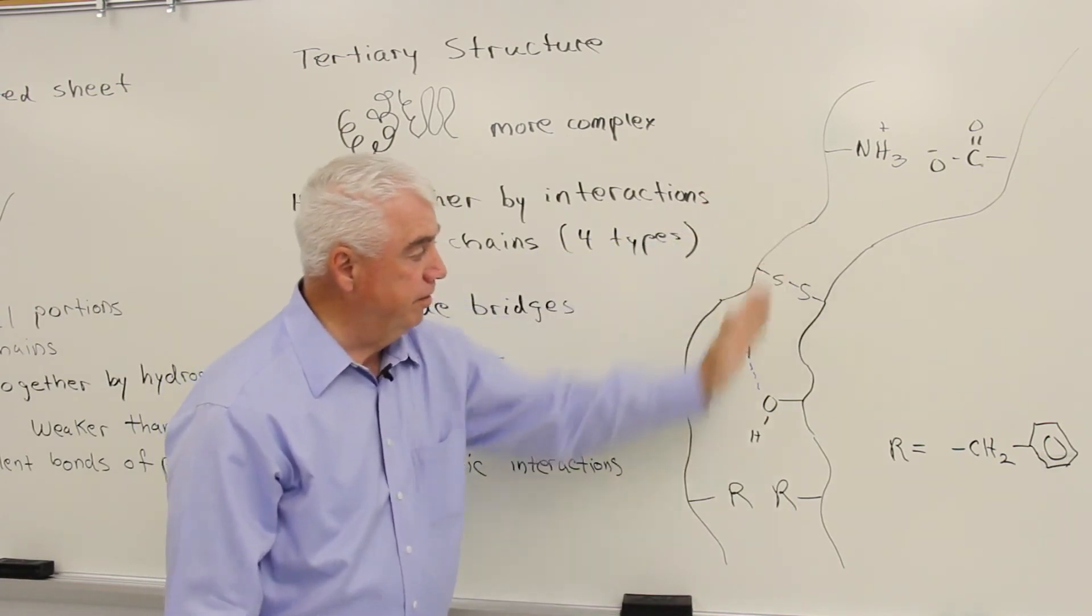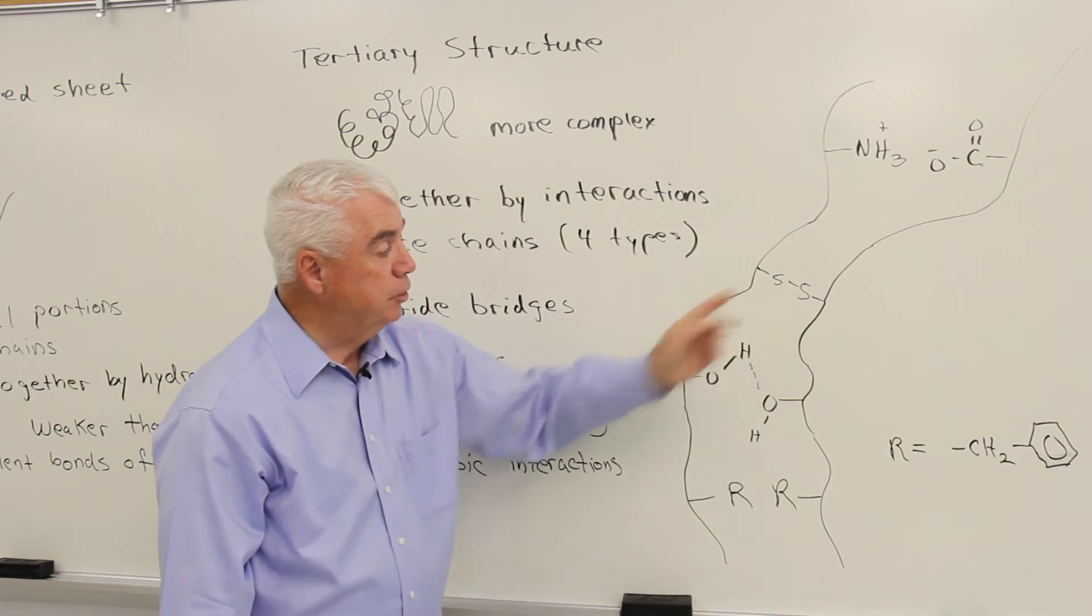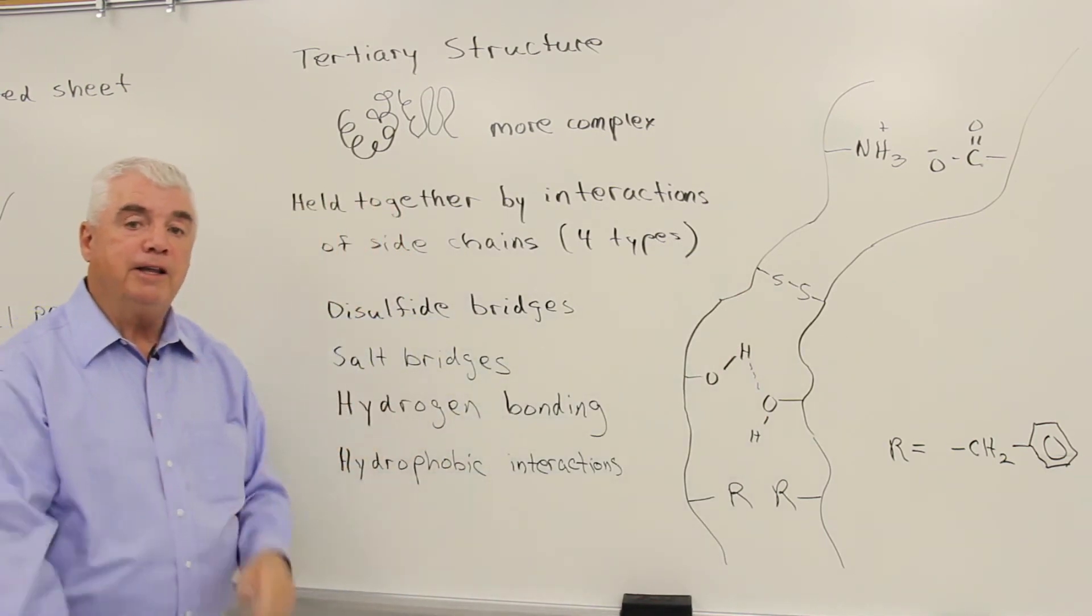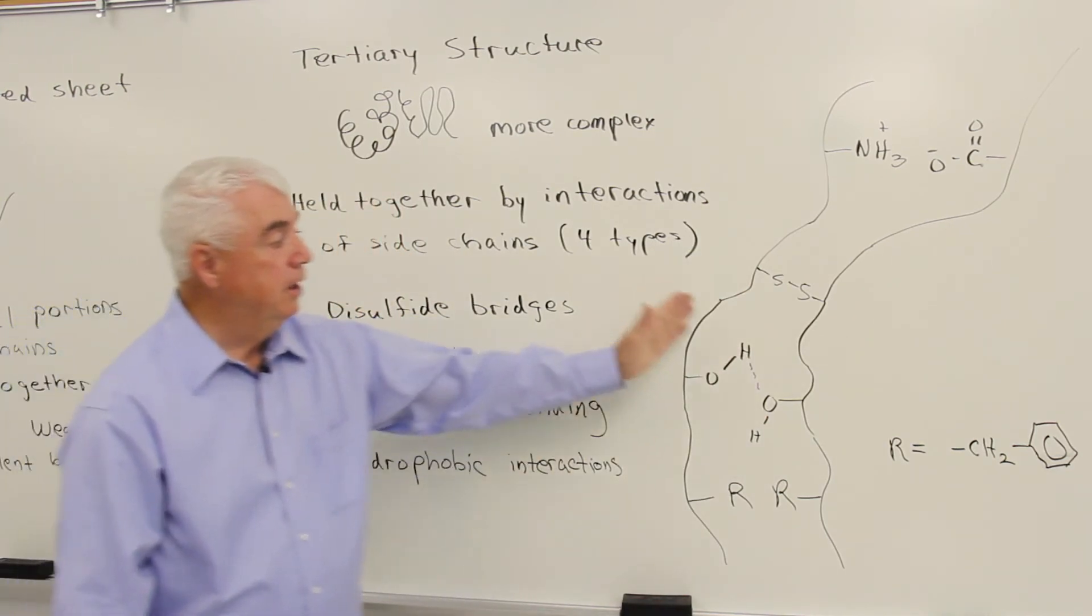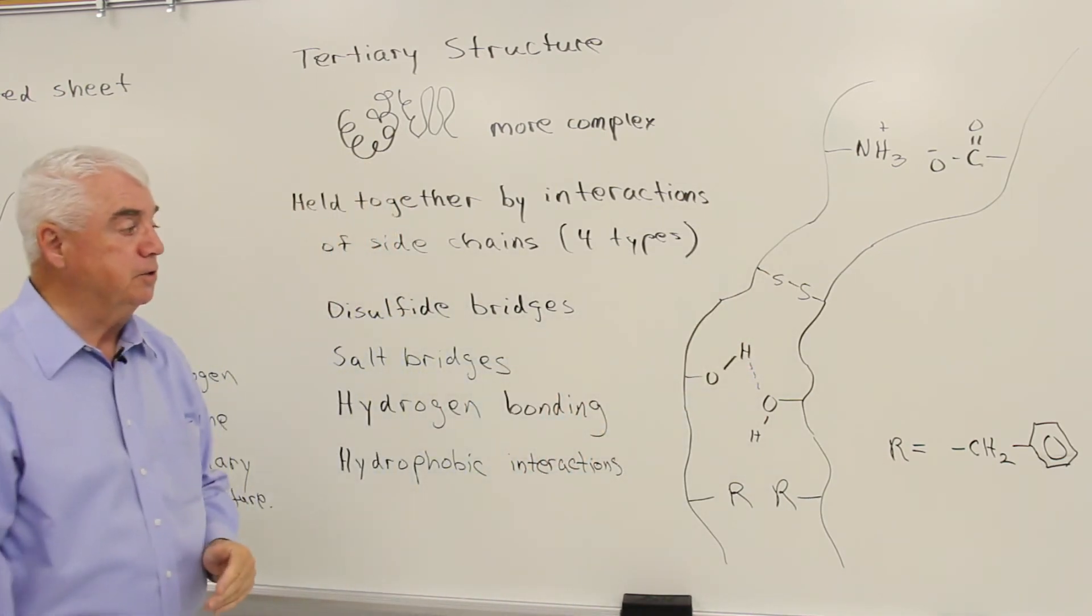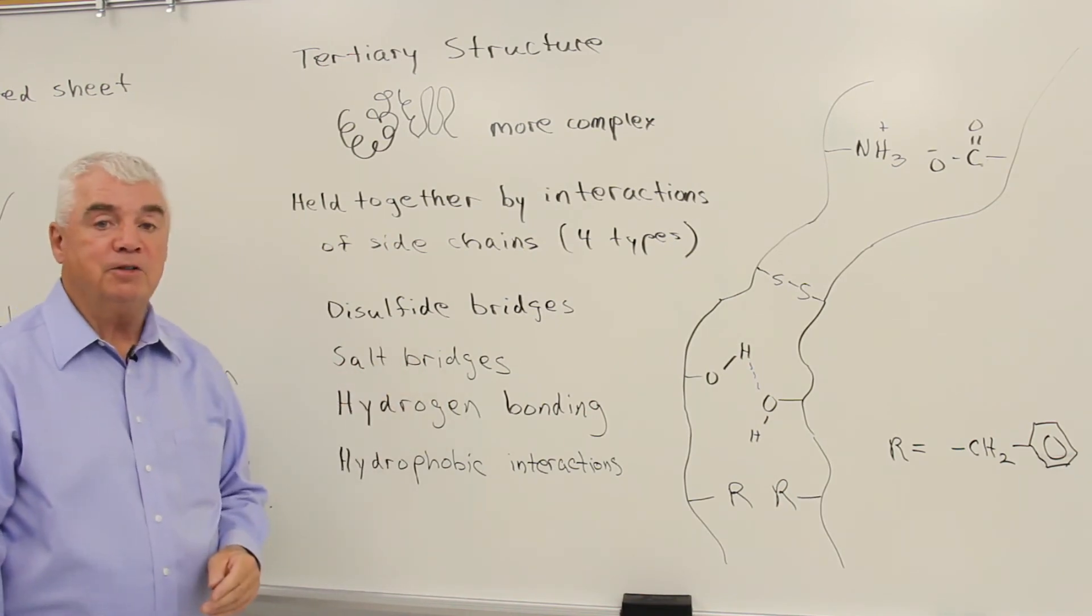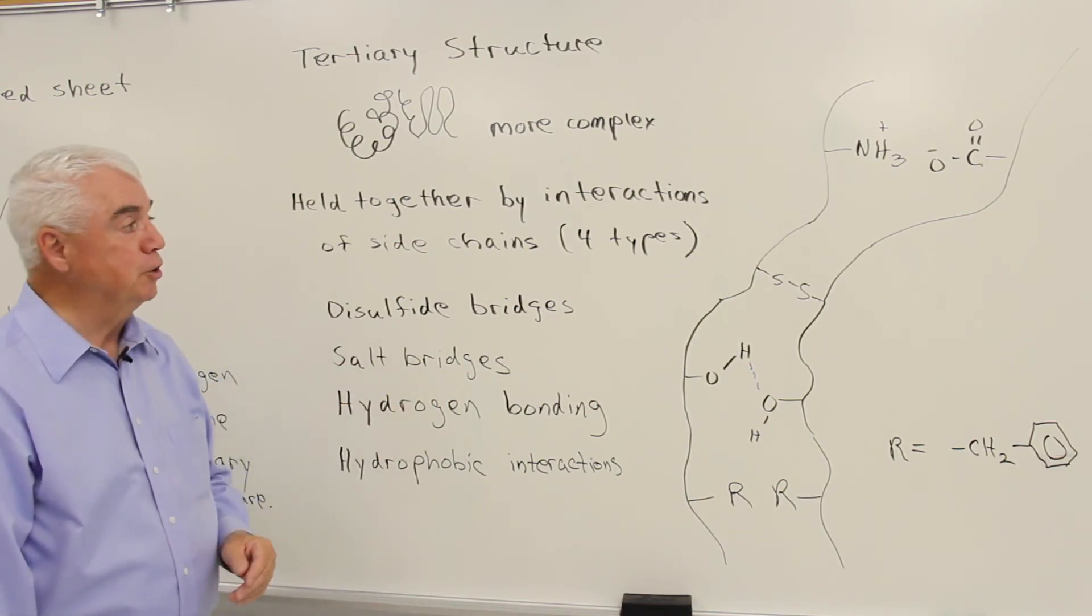Disulfide bridges, where if the lines represent the protein structure, the two sulfurs are bonding these two regions of the protein chain together, or perhaps two protein chains. Salt bridges. Well, the word salt sort of implies charges, ionic charges.